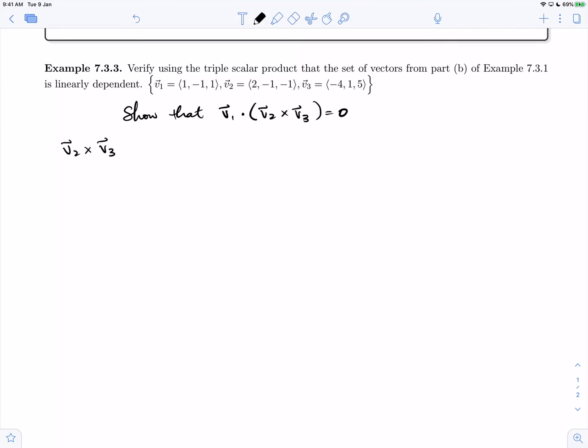v2 crossed with v3. So 2, minus 1, minus 1 crossed with minus 4, 1, 5. We're getting minus 5 plus 1 is minus 4. We're getting 4 minus 10 is minus 6, and 2 minus 4 is minus 2.